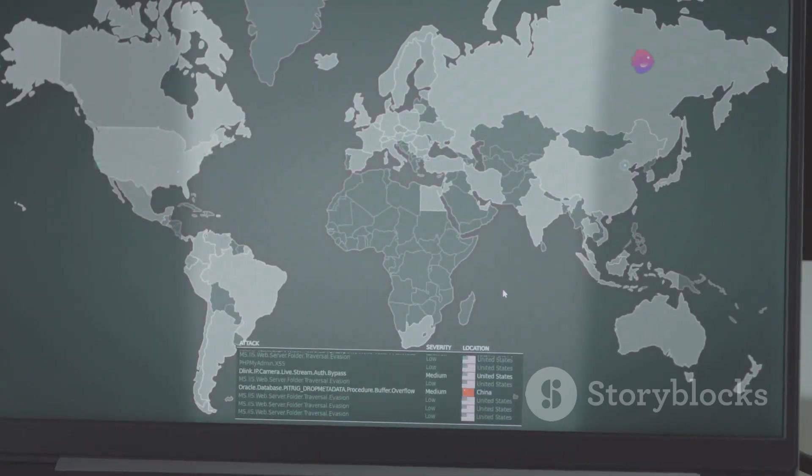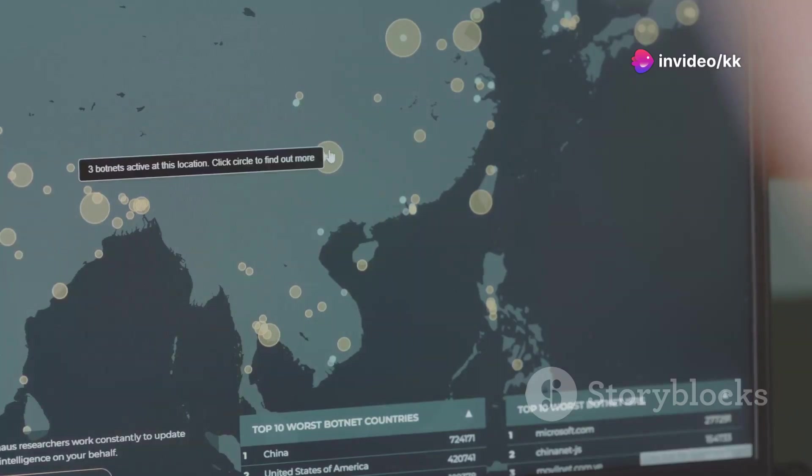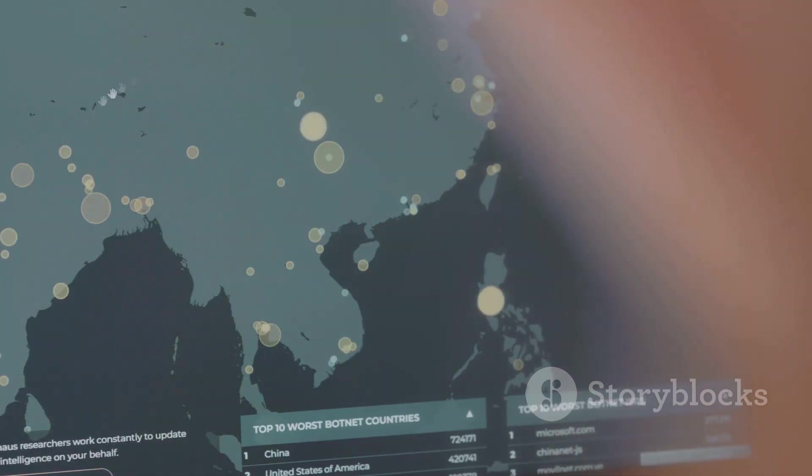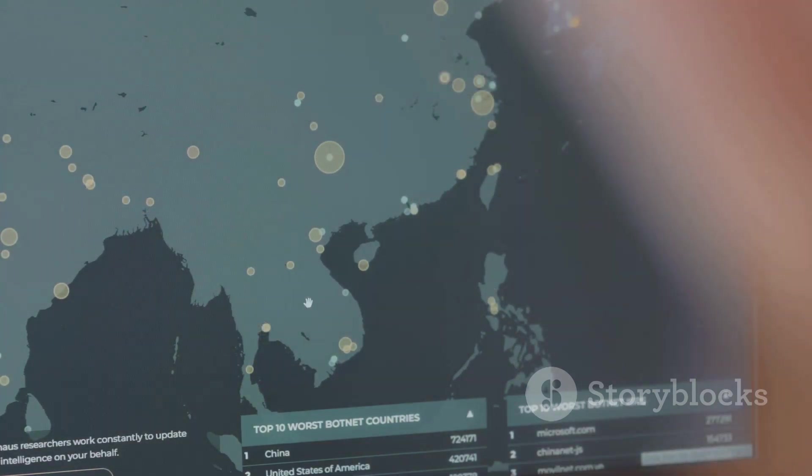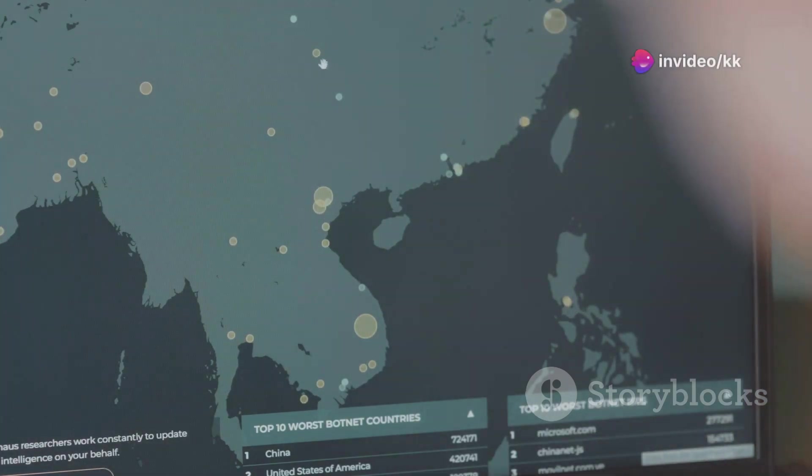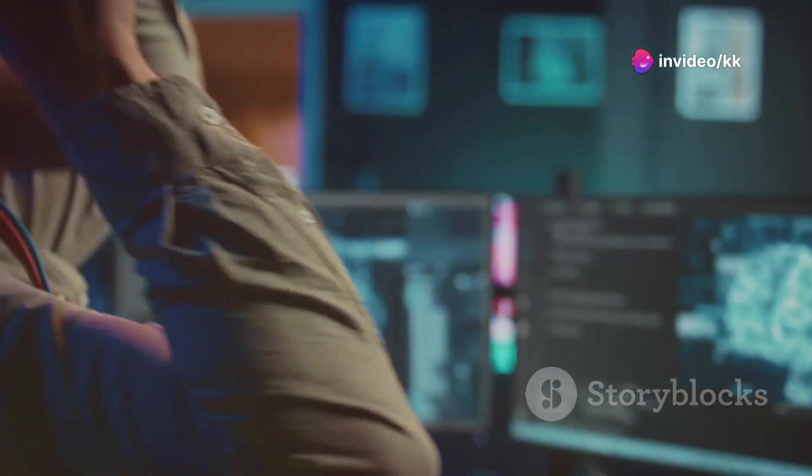Shortly after, Karp demonstrated that many other important problems, like finding the optimal route between cities, the travelling salesman problem, were also NP-complete. His work expanded the scope of NP-completeness and showed that it was a pervasive phenomenon in computational theory. This established a whole class of interconnected problems, all equally difficult to solve.